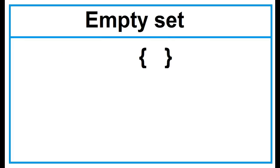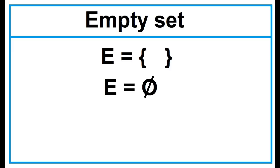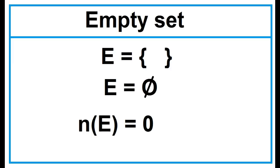This is the symbol of an empty set. Let's name it Set E. Another way of writing Set E is using this symbol — the null set. The cardinality of Set E is equal to 0. This notation simply means the number of elements.